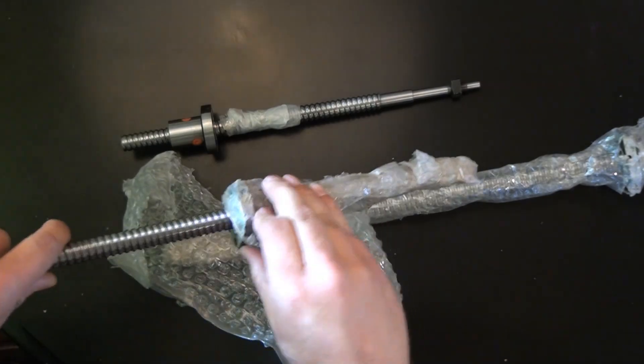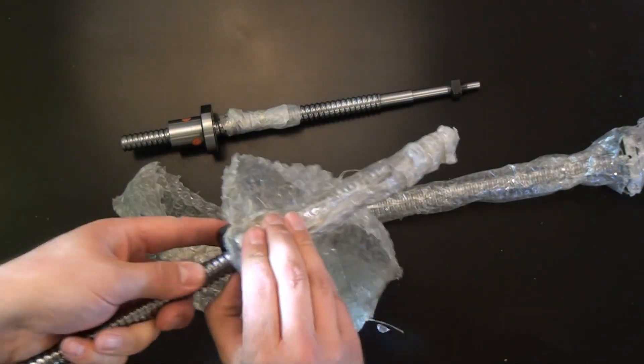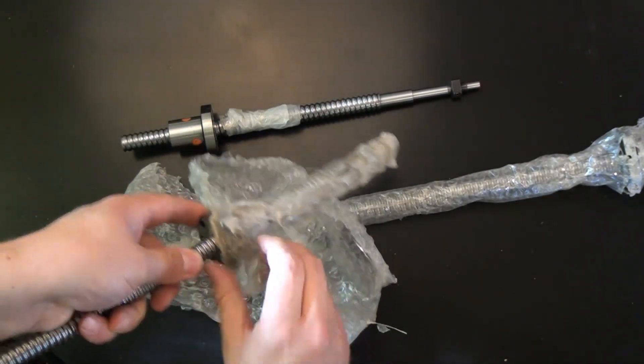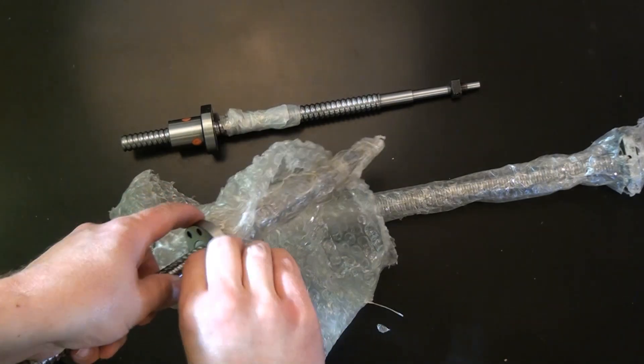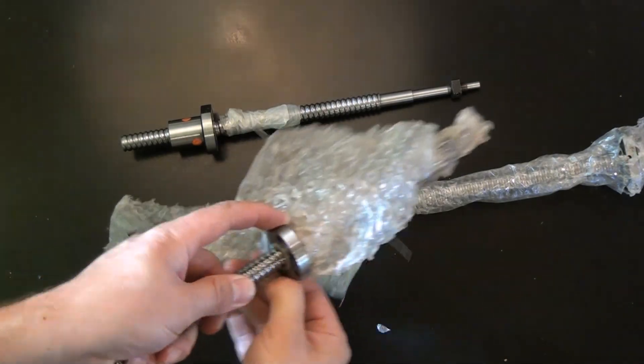Another tip is when you receive your ball screws, put the nut in the middle of the shaft and then use some clear Scotch tape or packing tape. Don't use the yellow type tape, but tape the nut in place